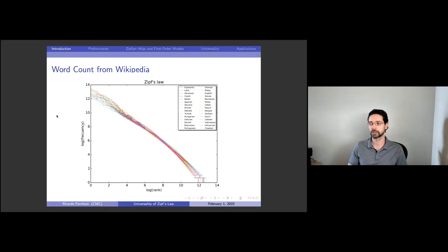I'll frequently have the size — the size of cities, another classic example of Zipf's law, or the size of firms — on the y-axis, and then we'll have the rank on the x-axis. This is a common way to visualize Zipf's law because you see a straight line with slope minus one, and you know that you have Zipf's law.